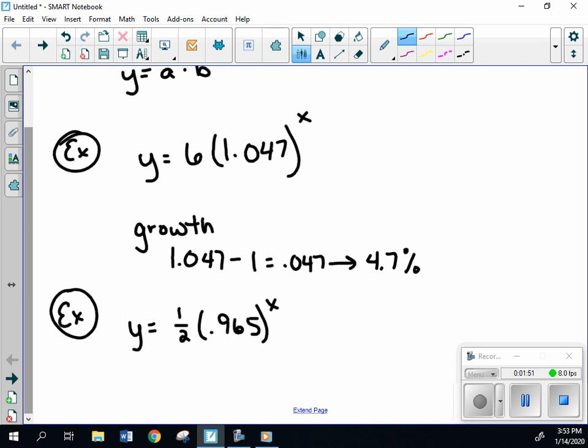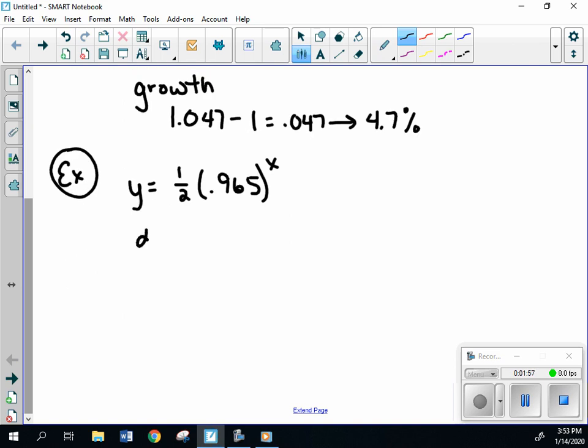So same kind of concept in terms of how you find that rate. But instead of our number minus 1, it's going to be 1 minus that instead. And that right there is going to give us our rate then. So we are decaying at that situation at 3.5%.